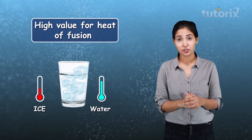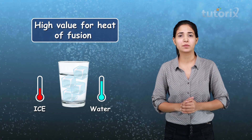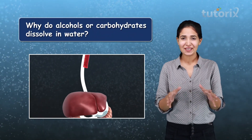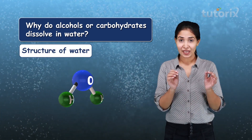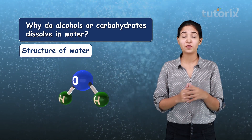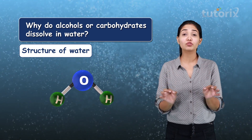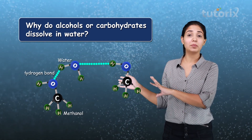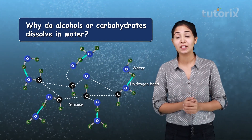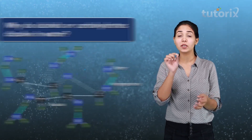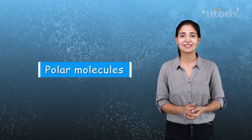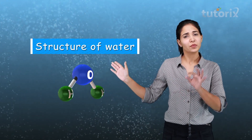This property of hydrogen bonding leads to an interesting question: why do alcohols or carbohydrates dissolve in water? The answer lies in the structure of water. Because water has hydrogen bonds, it forms extensive bonding with compounds like alcohols or carbohydrates. Whenever we are dissolving a solute molecule in water, they lead to the formation of hydrogen bonding.